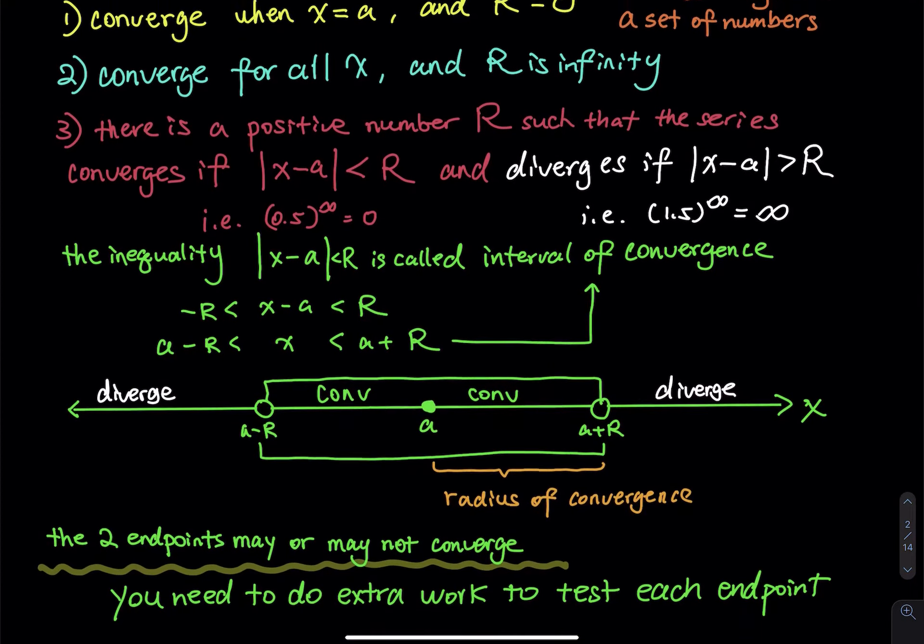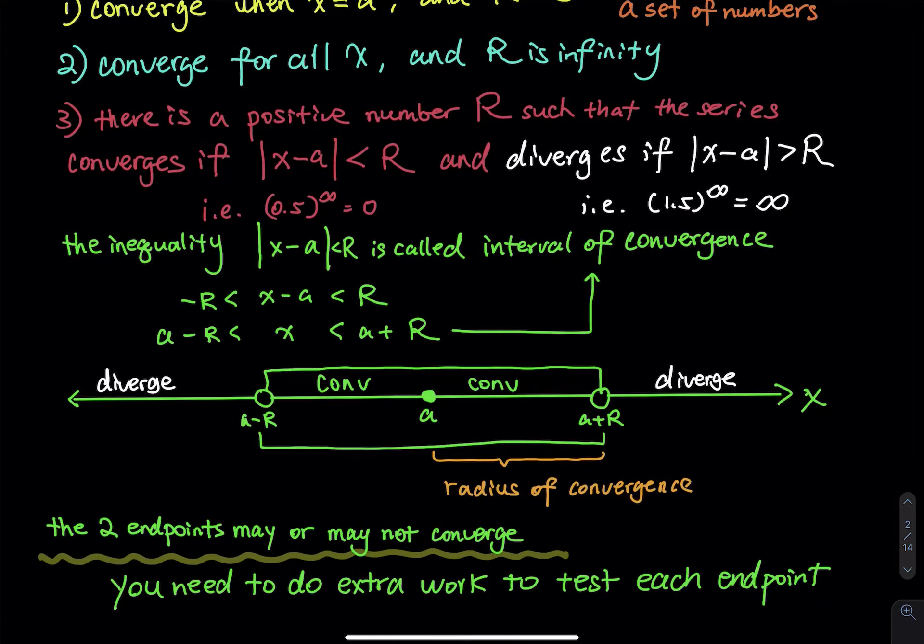The green handwriting is what you need to do a lot in every single problem. You will be solving a compound inequality, and this result represents interval of convergence. When you solve a compound inequality, the piece in the middle is between negative R and positive R. Then you add a on each side, so you have a minus R less than x less than a plus R. This result is called the interval of convergence.